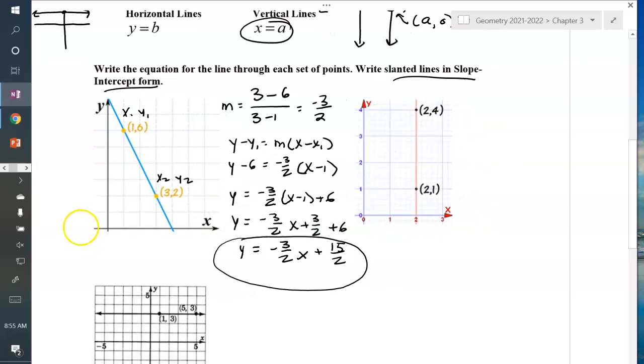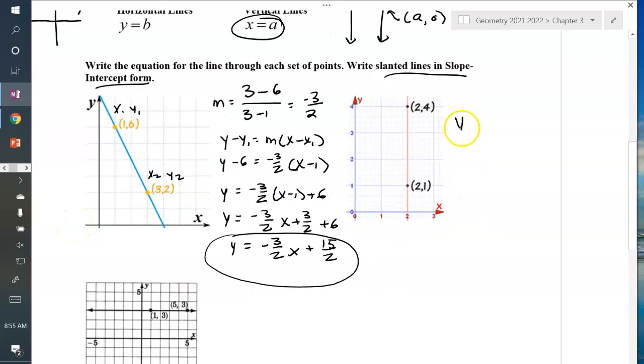All right, our next one. This is a vertical line. So my equation is going to be x equals, and then all I've got to do is choose the x-coordinate. Notice that's 2 and that's 2. They're both the same. So it doesn't matter which one I pick. My line is x equals 2.